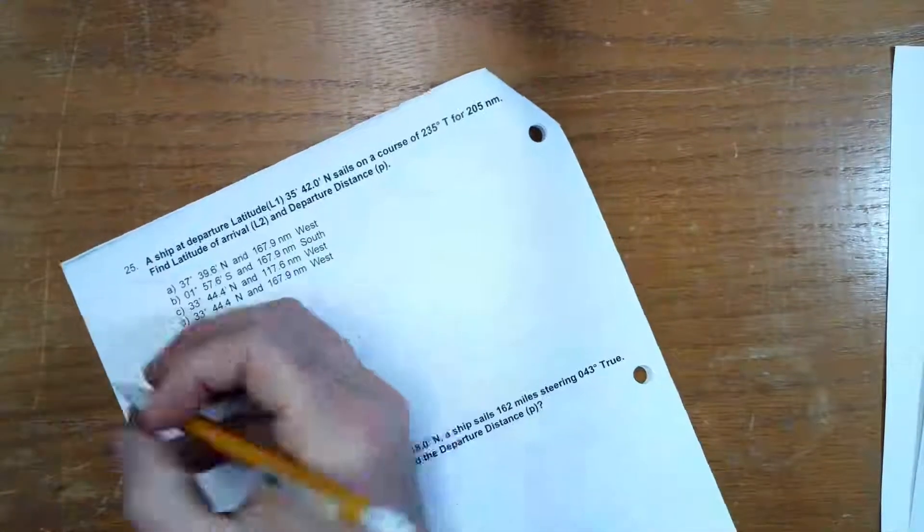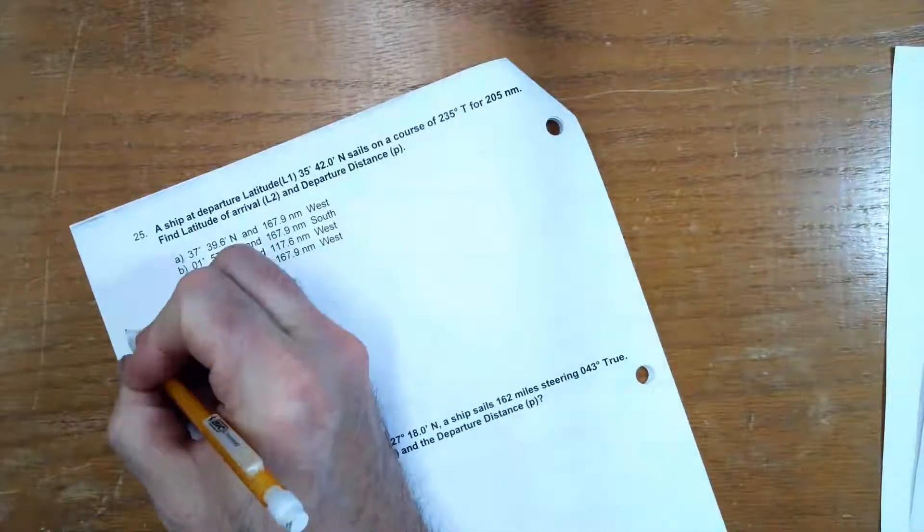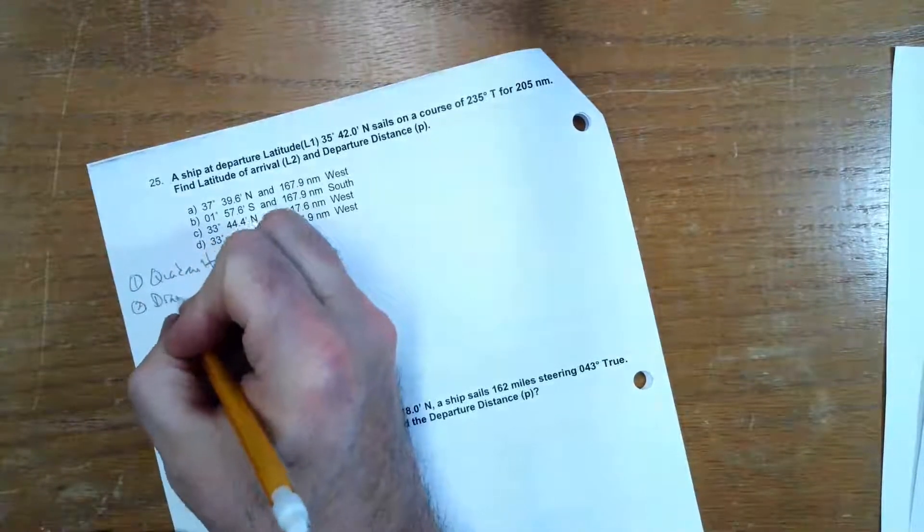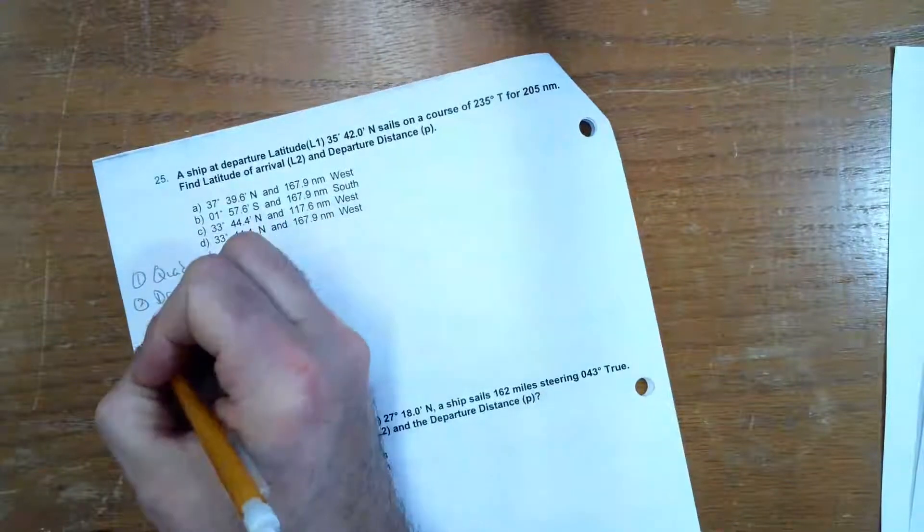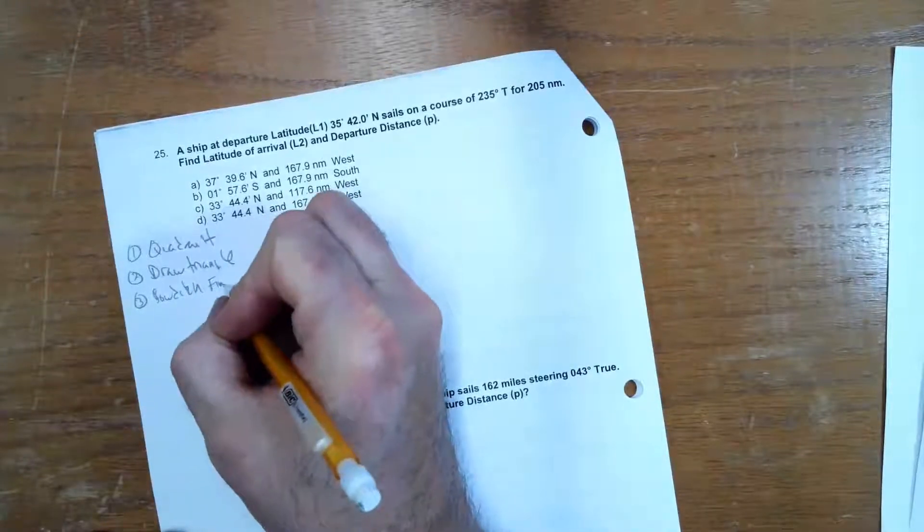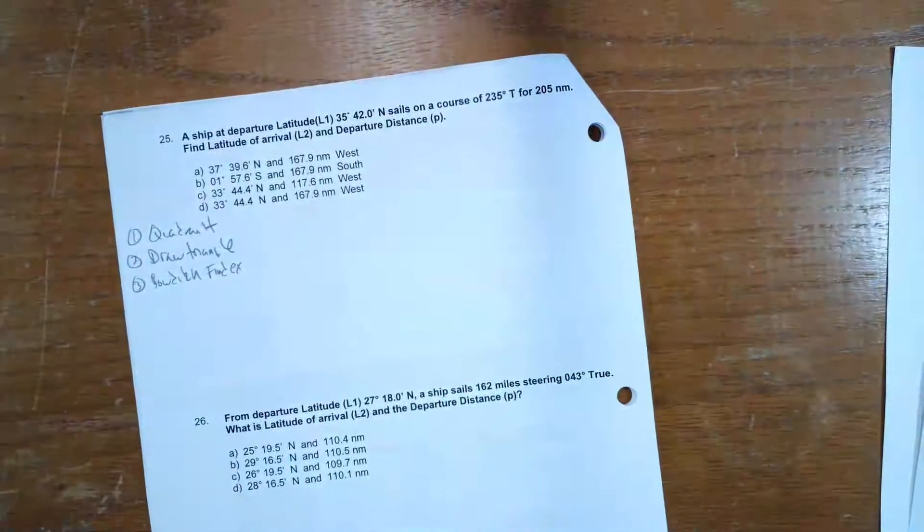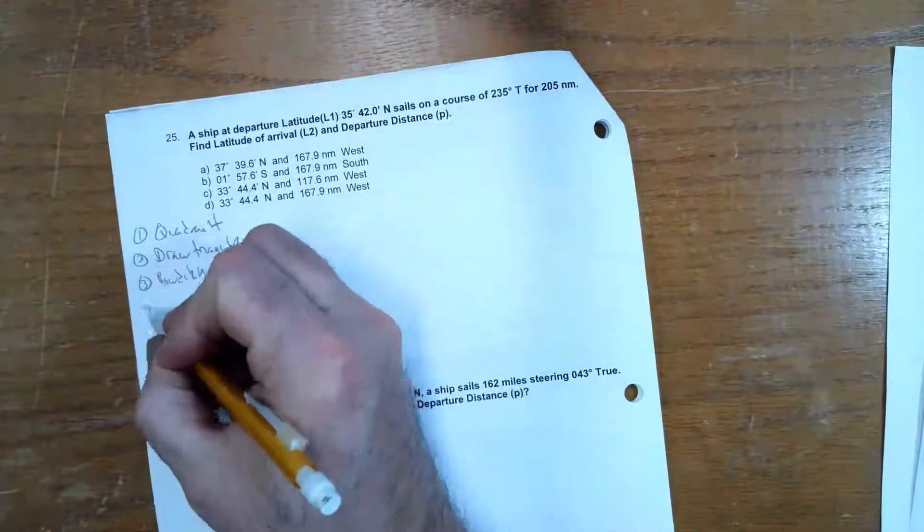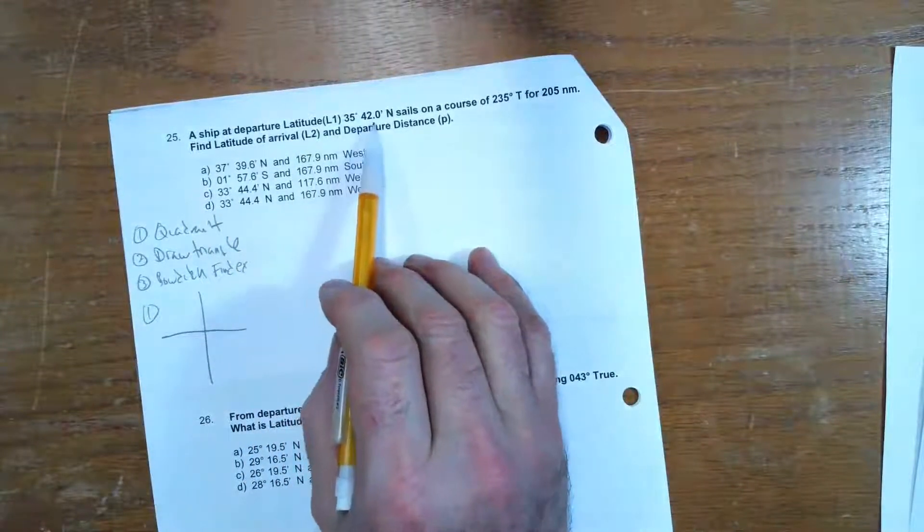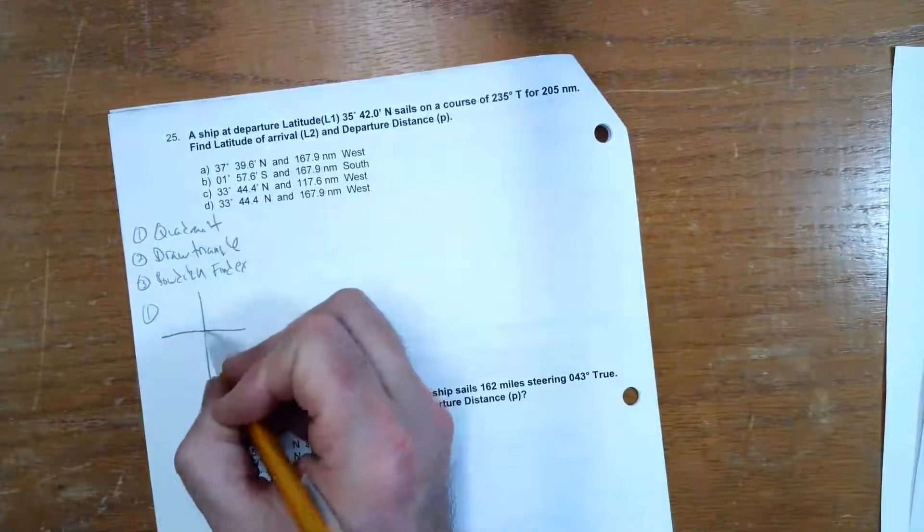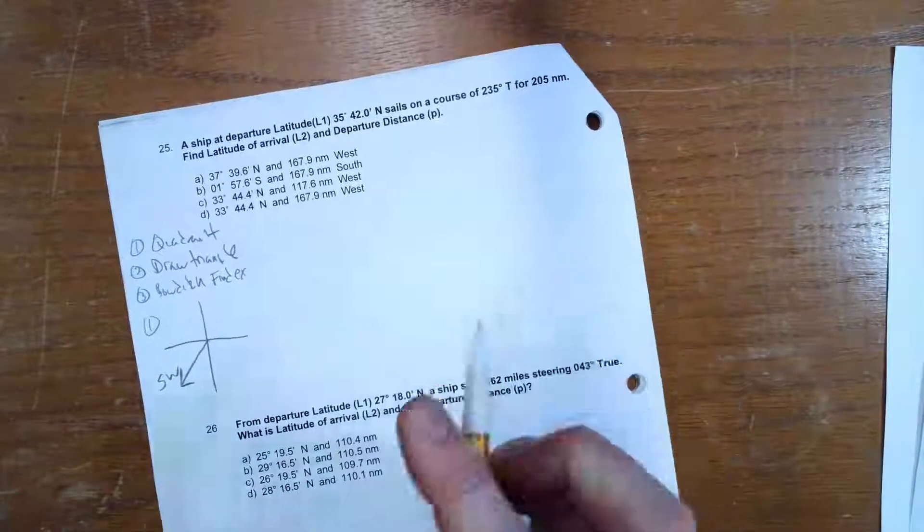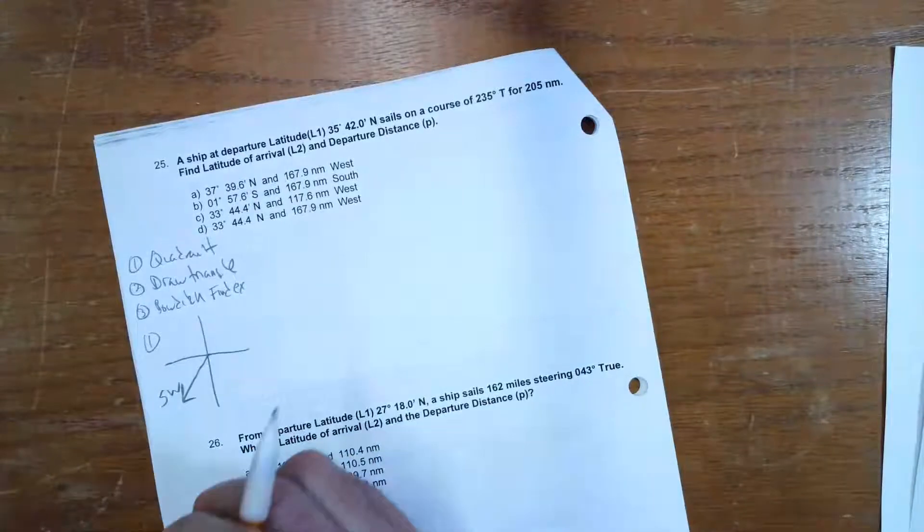What I'm going to do, similar to what I did before, is first I'm going to figure out my quadrant. Then I'm going to draw my triangle and populate it, and then I'm going to go to Boudic and find my example, and then I'm going to follow those instructions. So the first thing I'm going to do, step one, is what quadrant is this? A ship at departure latitude 35°42' north sails on a course at 235°. So 235° is down here. So that is the southwest quadrant.